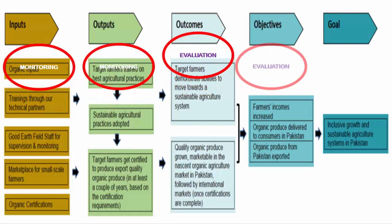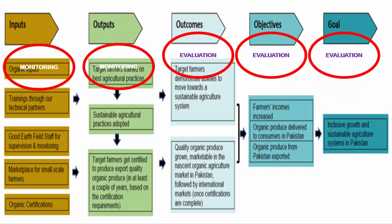So, how is monitoring and evaluation of water and sanitation projects done? The key thing you always need to pay attention to is the sequence of activities: inputs, outputs, outcomes, objectives, and goals. Monitoring is usually done at the input, output, and outcome stages, while evaluation usually takes place beyond that.